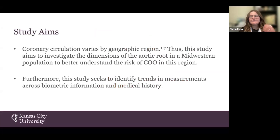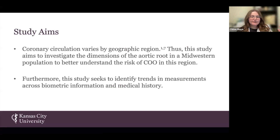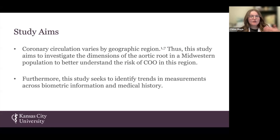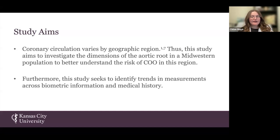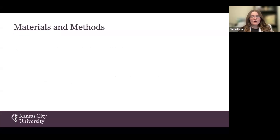The crux of this project lies in trying to identify risk vectors for COO in a Midwestern population such as ours. Coronary circulation, including the origination points of our coronary arteries, is known to vary by geographic region. So identifying specific changes in the aortic root in a Midwestern population is crucial for understanding the risk of COO in this region. Furthermore, our study seeks to identify trends in measurements across biometric information and medical history. We utilized 47 formalin-fixed cadavers from the Kansas City University Gift Body Program and dissected on both the Casey and Joplin campuses.